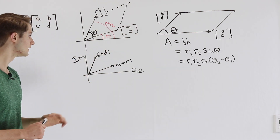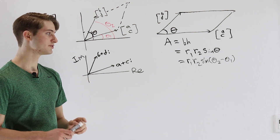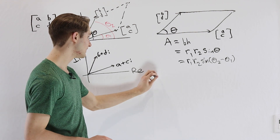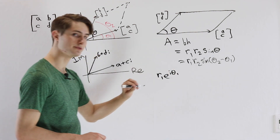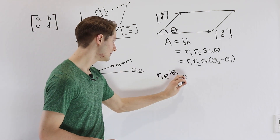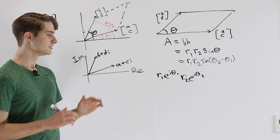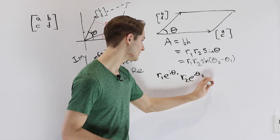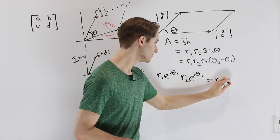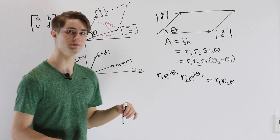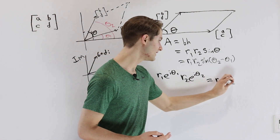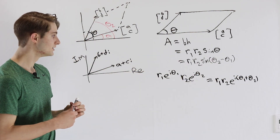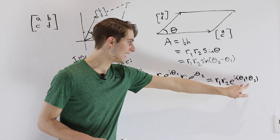When we look at complex numbers, we can express them in polar form using Euler's identity. So we can write A plus Ci as R1 times e^(i·theta1), and B plus Di as R2 times e^(i·theta2). When we multiply two complex numbers in polar form, we get R1·R2 times e^(i·theta1) times e^(i·theta2). Since we multiply two numbers with the same base by adding exponents, this becomes R1·R2·e^(i·(theta1+theta2)). The magnitudes multiply and the angles add.